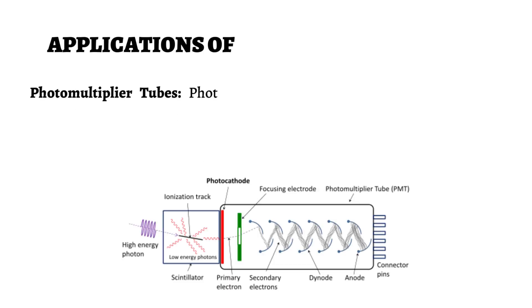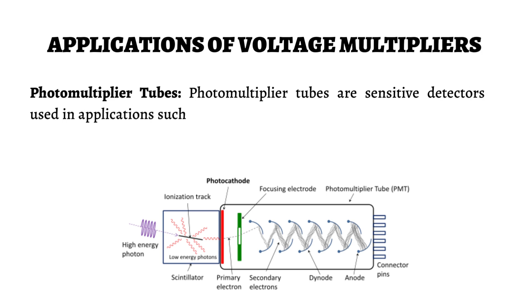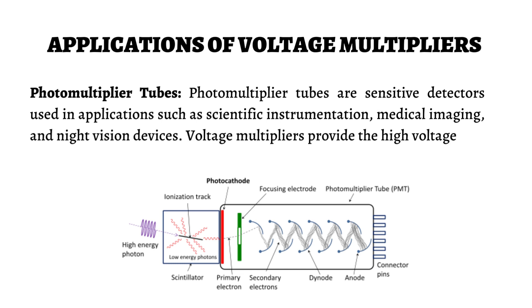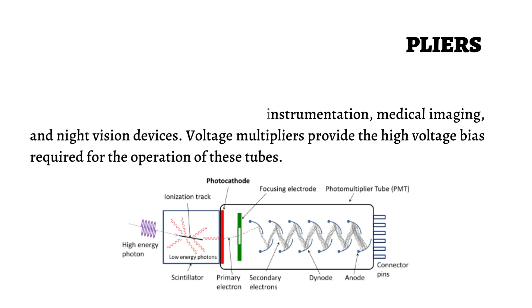Photomultiplier tubes are sensitive detectors used in applications such as scientific instrumentation, medical imaging, and night vision devices. Voltage multipliers provide the high voltage bias required for the operation of these tubes.